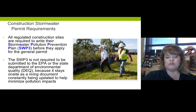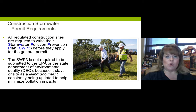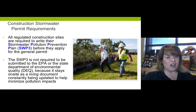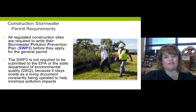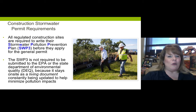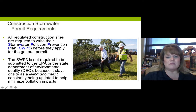The stormwater pollution prevention plan is not required to be submitted to the EPA or a State Department of Environmental Quality for approval, because it's a living document. It stays on site and changes on a regular basis — at a construction site, essentially daily — because they have a requirement to maintain a site map with their best management practices. The updates help minimize pollution because the company is checking their BMPs for effectiveness, keeping track of them to ensure they're in compliance.